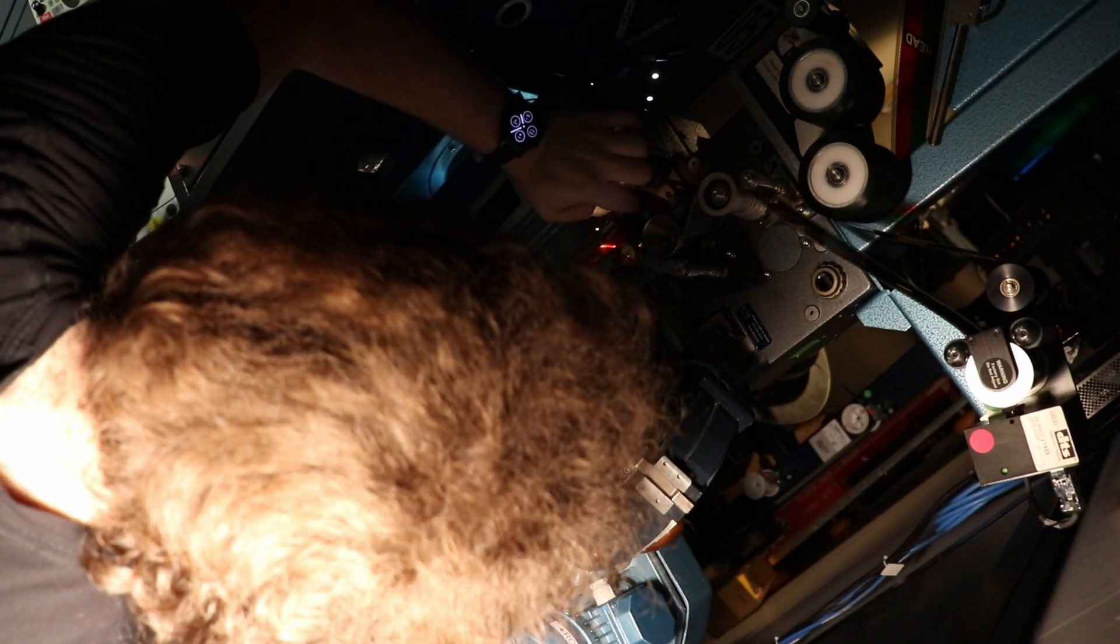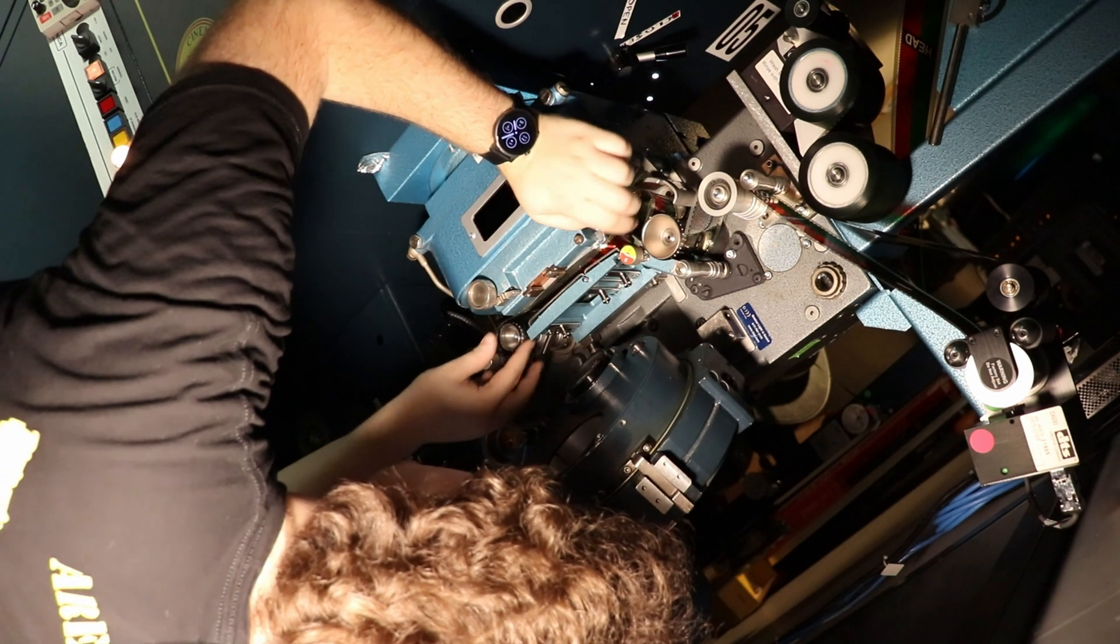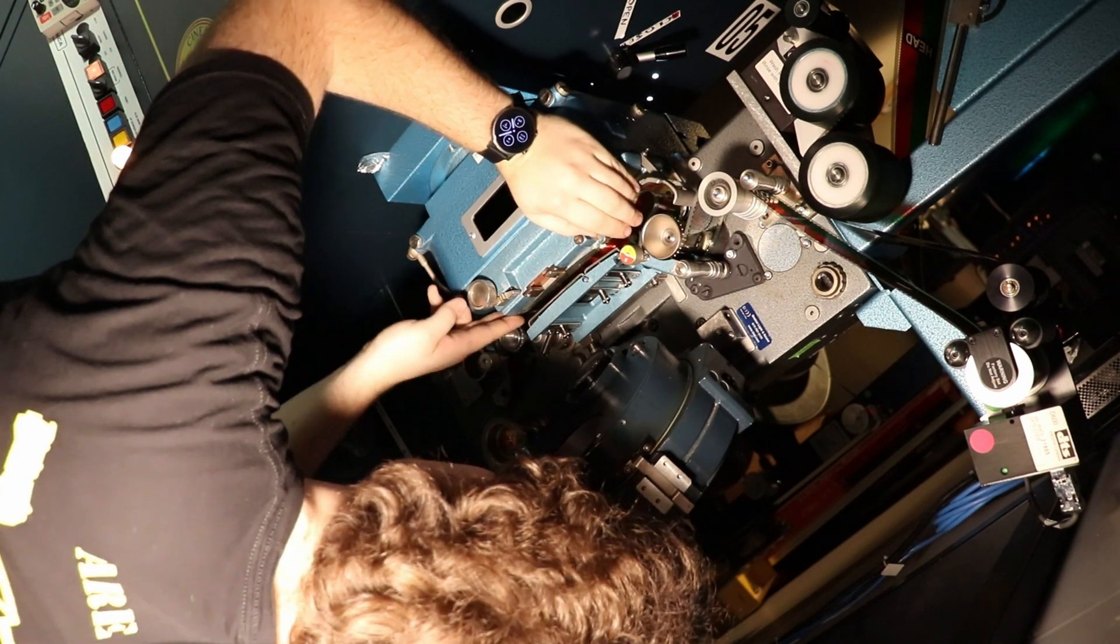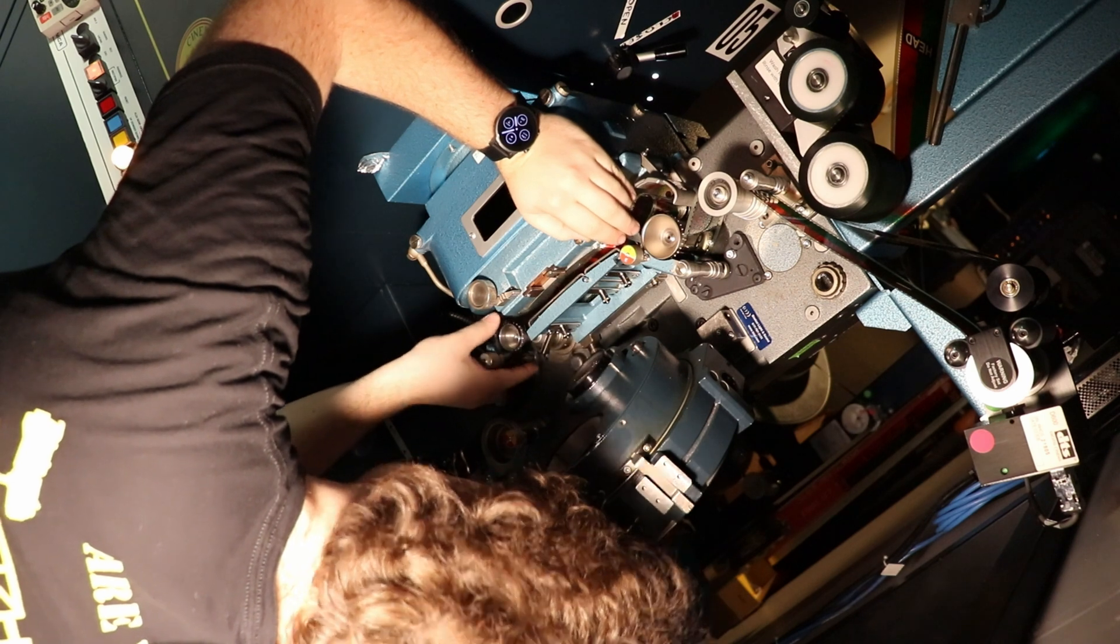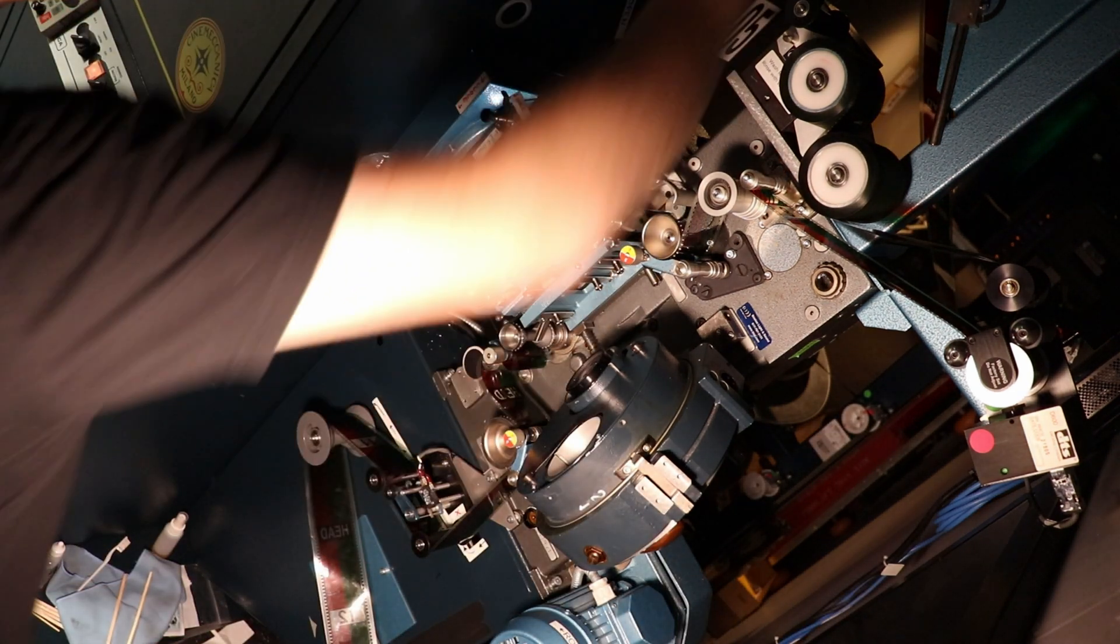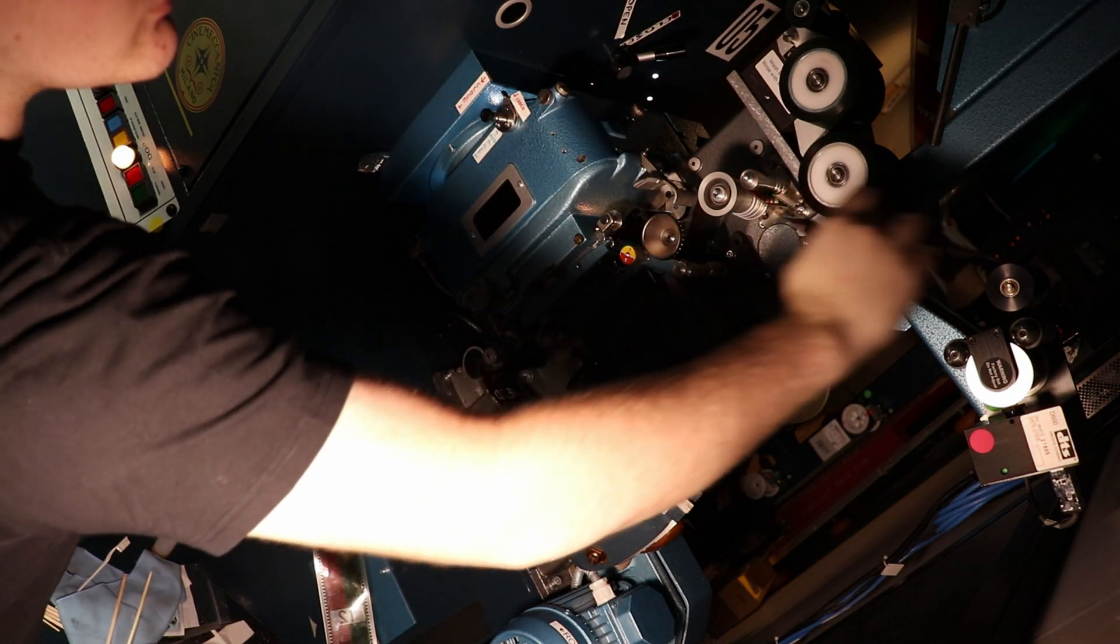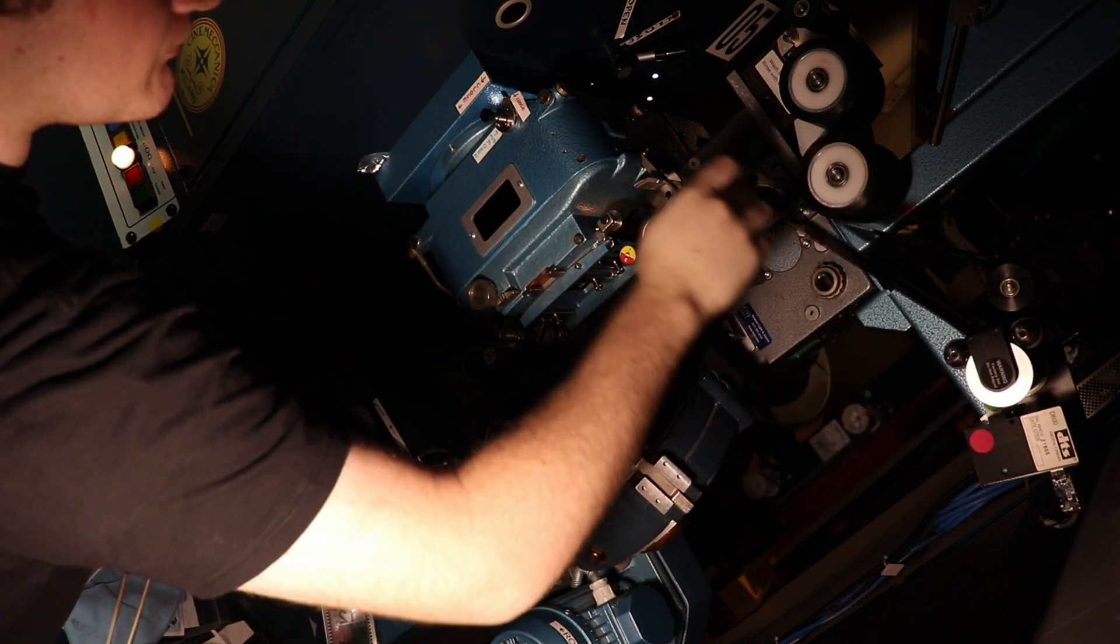When threading the projector, it's important to make sure your loops are the right sizes to avoid scratches, and that you're in-frame so the audience doesn't see an image that's split in the middle of the screen. Once everything is threaded and all the shoes are closed, you can check your work, then check it again, and then maybe a few more times.